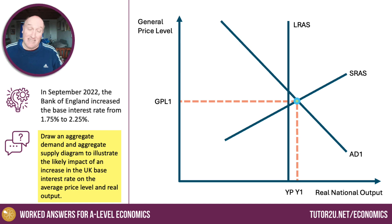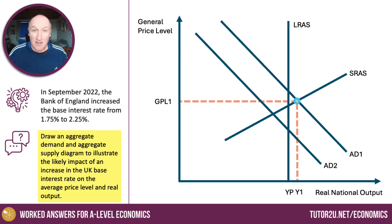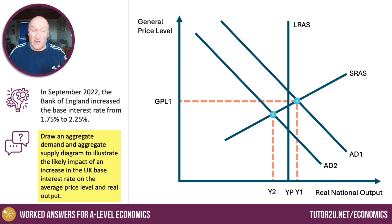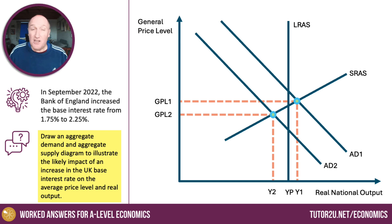So what's the effect of rising interest rates? The main effect is to try to bring down demand-pull inflationary pressure. Higher interest rates will curb consumer spending — maybe operating through the housing market — perhaps reduce planned business investment, and maybe drive the exchange rate higher, affecting exports. But the main effect is a fall in aggregate demand to AD2. That drives down the level of real GDP to Y2, which in theory brings down the general price level from GPL1 to GPL2. And that's basically all you have to do in this question for four marks.